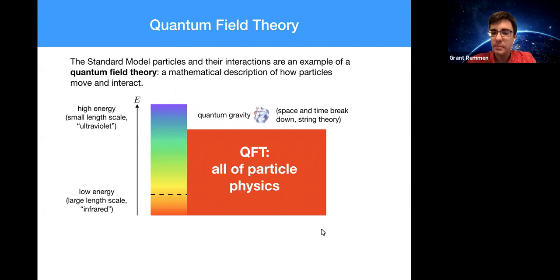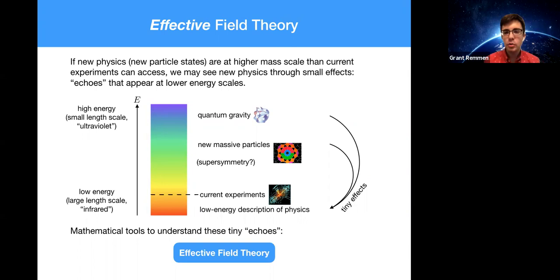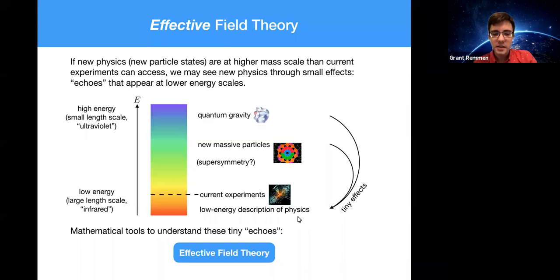There exists a wonderful set of mathematical tools for packaging and understanding how tiny effects from really high energy scales — from quantum gravity or from new quantum field theoretic physics we haven't yet observed — can give echoes in the deep infrared, echoes of new physics observable at long wavelengths we have access to. This set of tools, developed by Ken Wilson and others in the late 20th century, is known as effective field theory, and this talk will be an effective field theory talk.